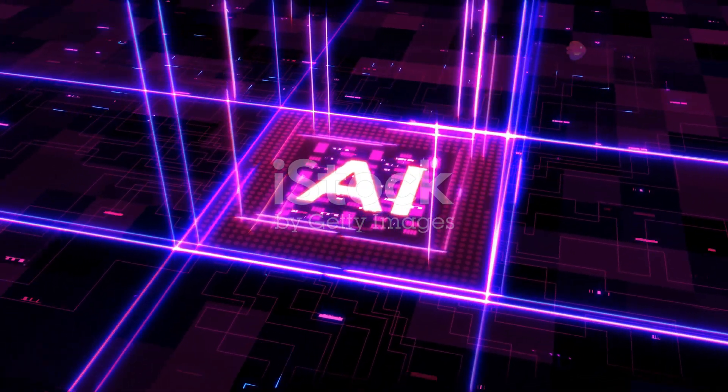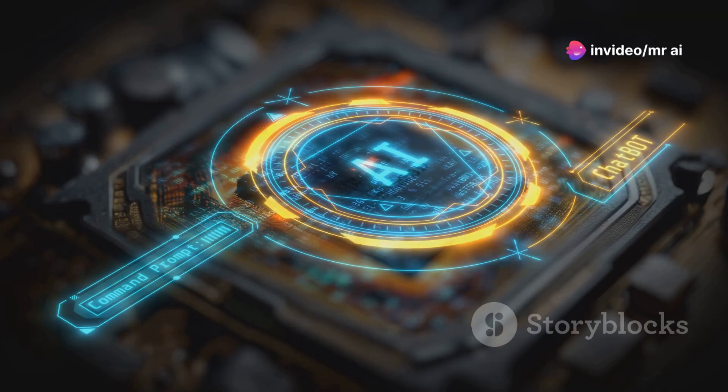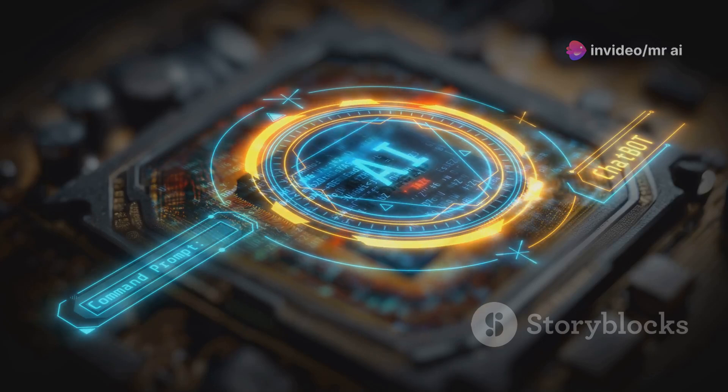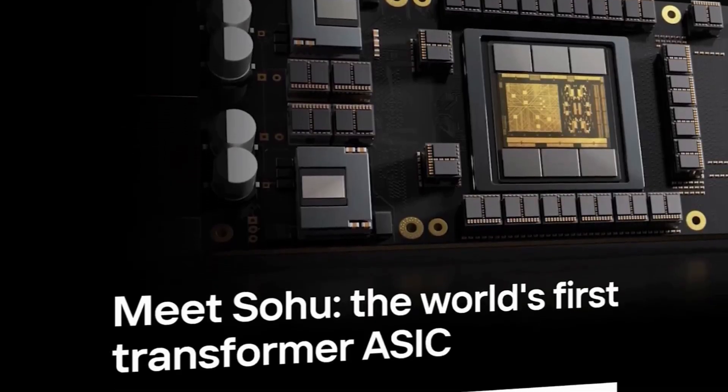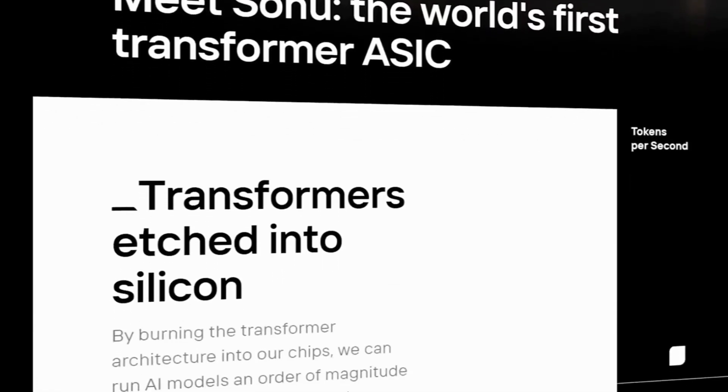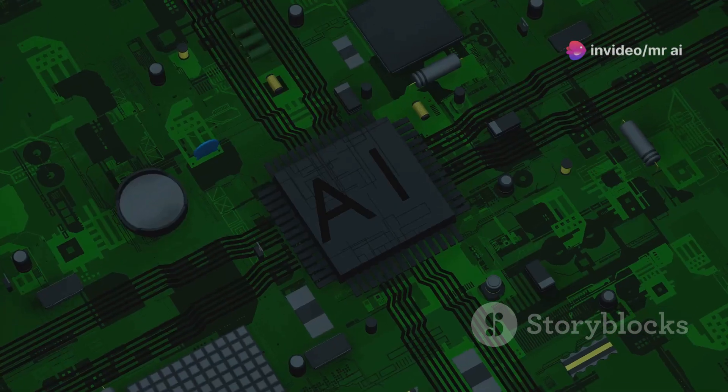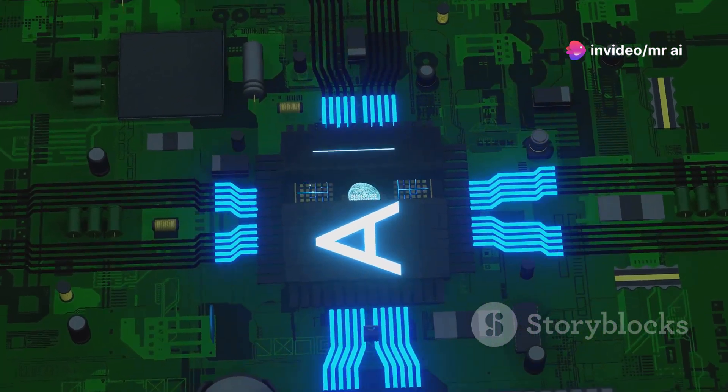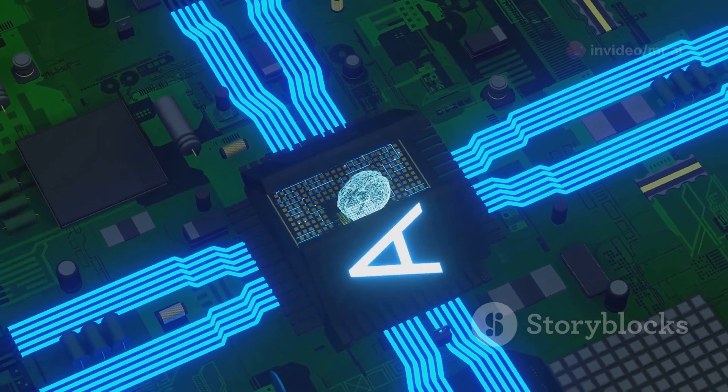In other exciting news, a startup named Etched, founded by two Harvard dropouts, has introduced a new AI chip called Sohu. They claim this chip can run models like ChatGPT up to 20 times faster than NVIDIA's top H100 chip. This breakthrough could drastically improve AI performance and capabilities, challenging the dominance of NVIDIA in the AI hardware industry.